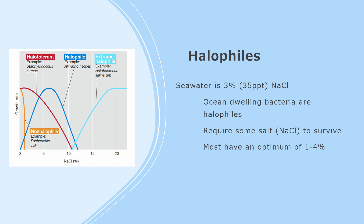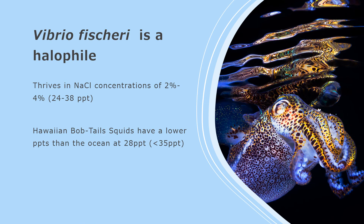These are not on the chart. Extreme halophiles, all the way to the right of the chart, need the most NaCl to live, at 15–30%. Vibrio fischeri, as you may have seen in the graph, are halophiles. Their optimal NaCl concentrations have been found to range from 24–38 ppt by the same studies that found their optimal media nutrients.